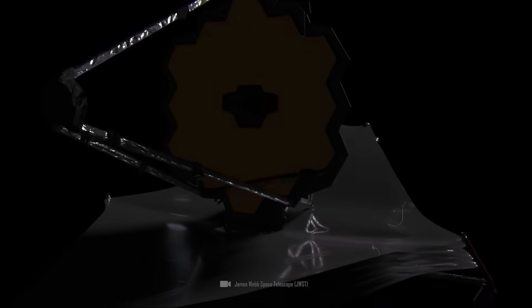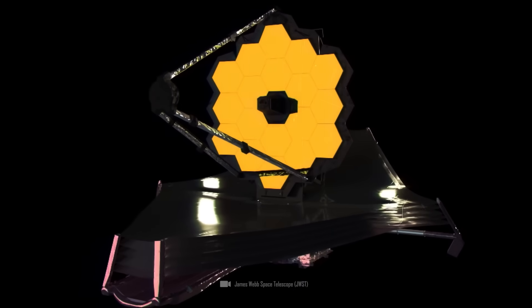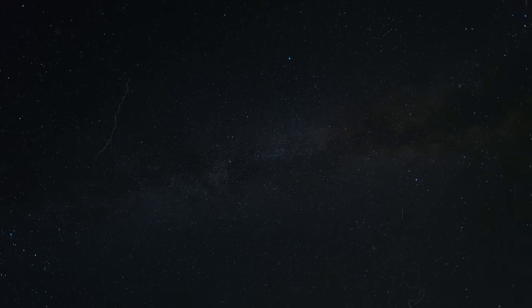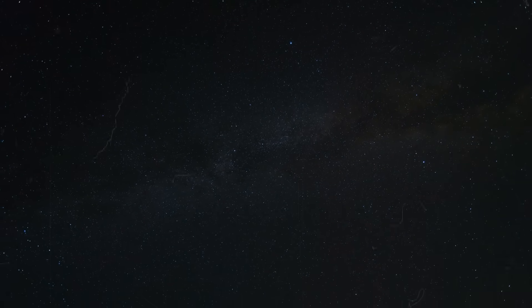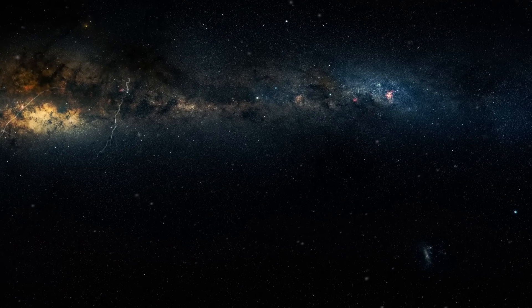The James Webb telescope uses the properties of light in a particularly revolutionary way. Unlike its predecessors, which mainly observe invisible and ultraviolet light, the new telescope is designed to study the universe in the infrared range.